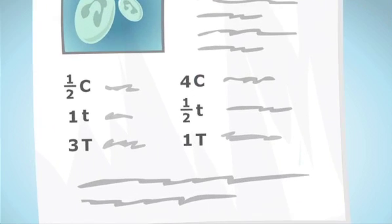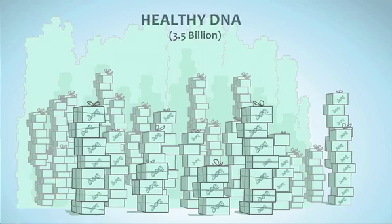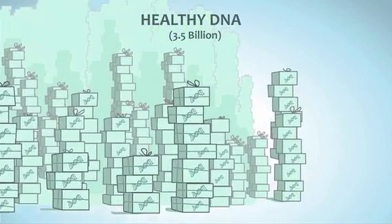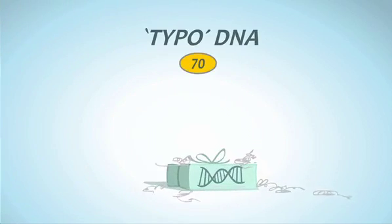Very rarely, these recipes have a typo in the genetic code, which results in an incorrect message. In fact, everyone is born with about 70 such typos within their vast genetic code. Fortunately, most of these typos live quietly inside us throughout our lives.